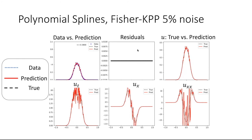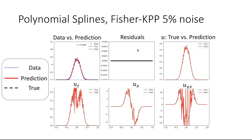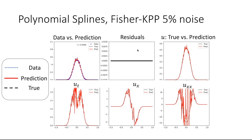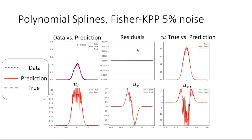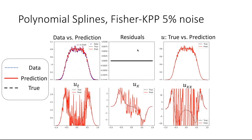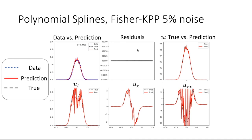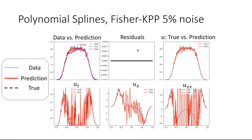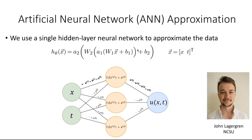What we observed is that when we add even small amounts of noise to the data — for example just 5% noise — we're very unable to accurately show how our data set changes in both time and space. In the current video, we're using polynomial splines to fit a given artificial simulation where the data is slightly noisy. We see that the estimates of how cell density changes over time, space, and its second spatial derivative are very inaccurate — the first order derivatives are pretty noisy compared to their true values, and the second spatial derivative gets extremely noisy as time progresses.